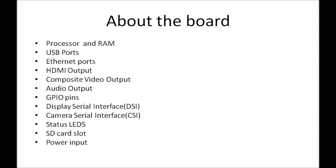This slide gives an idea about the features of the Raspberry Pi board. It has a processor, RAM, USB ports, Ethernet ports, and HDMI ports — so you can connect it to a desktop monitor. It also has a composite video output, audio output, GPIO (General Purpose I/O) pins, a Display Serial Interface (DSI), and a Camera Serial Interface (CSI) which allows developers to connect a camera directly. There are status LEDs to show power state and transmission/reception status, an SD card slot for loading the Linux image, and a power input.